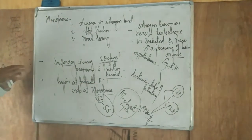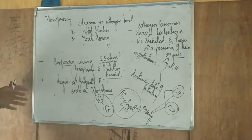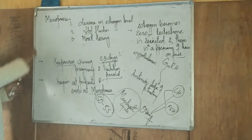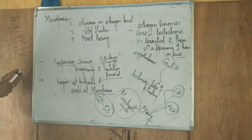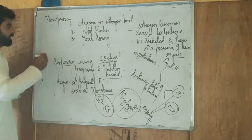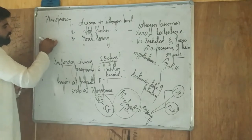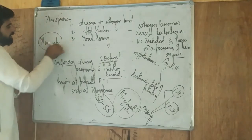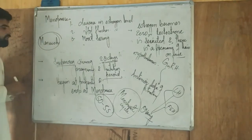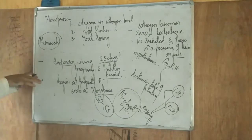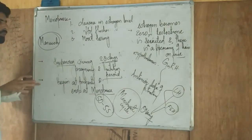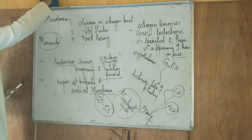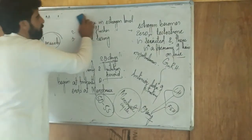These are the various changes seen in a female during menopause. The first menstrual cycle, called menarche, takes place at puberty and lasts up to menopause. After menopause there is no menstrual cycle.